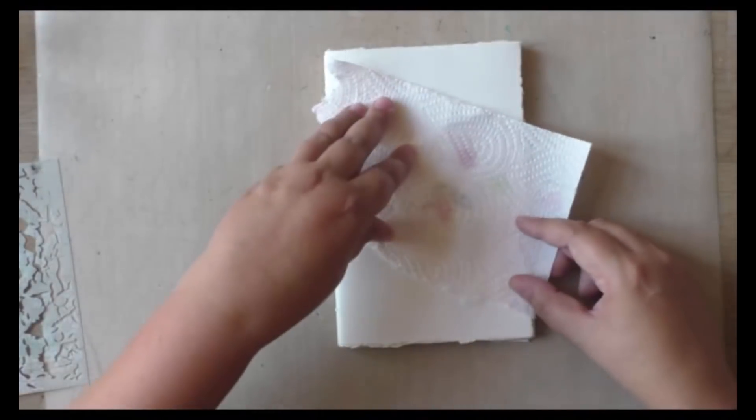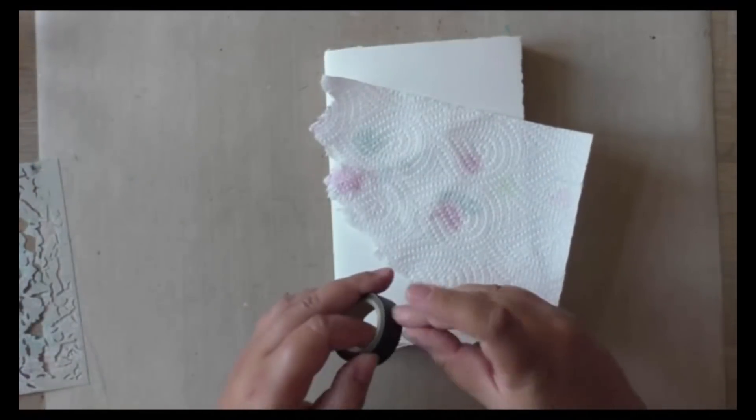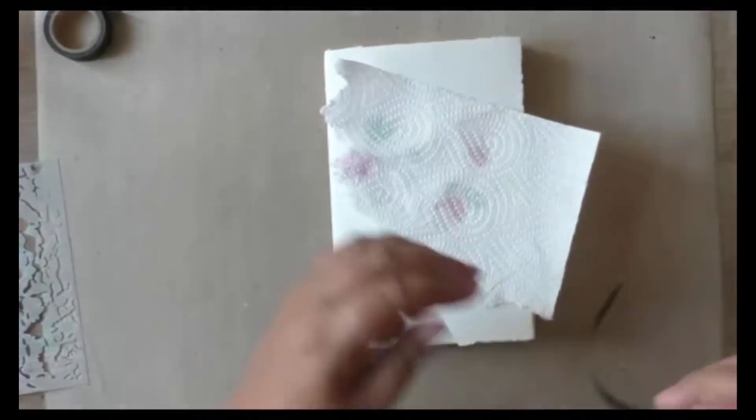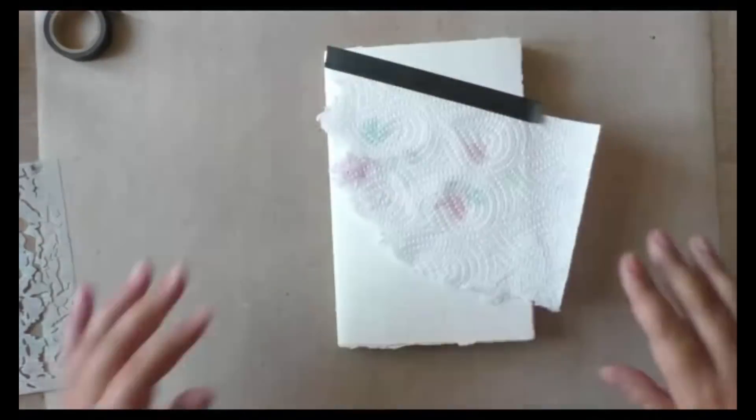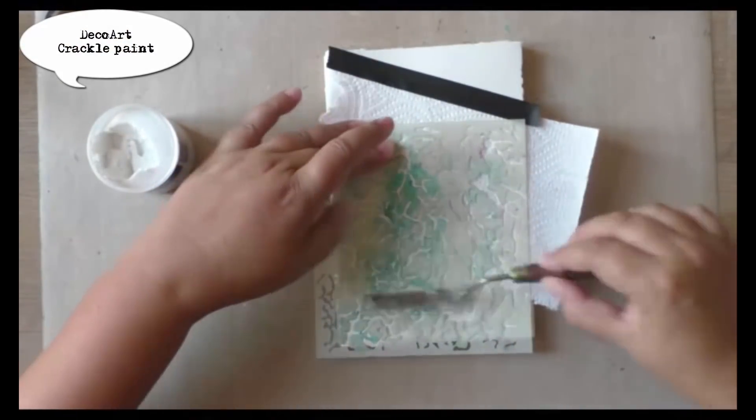I'm also prepping this piece of kitchen roll because I don't want to apply the medium all over the spread, so this will protect what I want to keep white. Using a piece of washi tape, I keep that piece of kitchen roll in place.